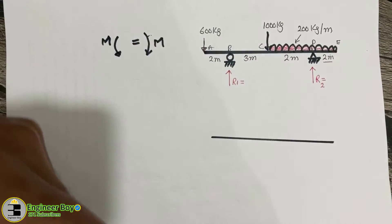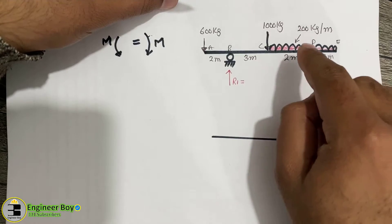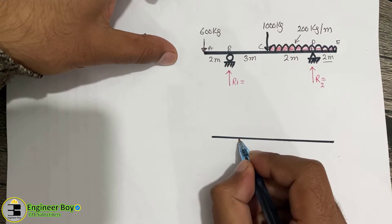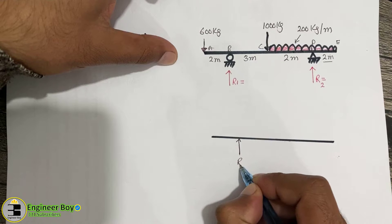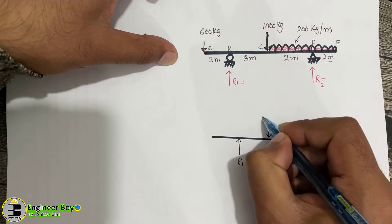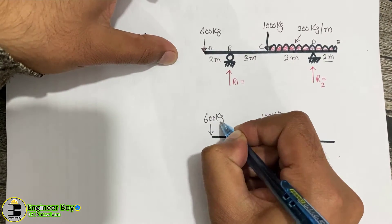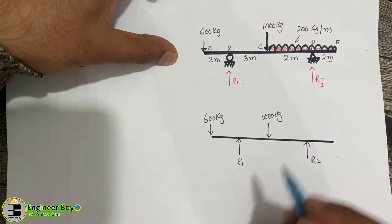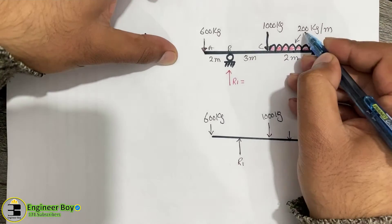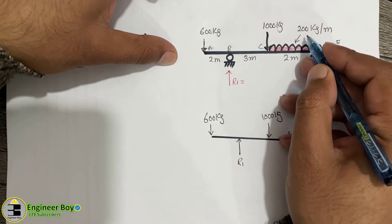We have a UDL of 200 kg per meter, so we'll convert it into a point load. On the beam we have R1 and R2, with 1000 kg at the middle and 600 kg on the left-hand side. For the UDL over a 2-meter span, the equivalent point load is 200 kg/m times 2 meters, which equals 400 kg.